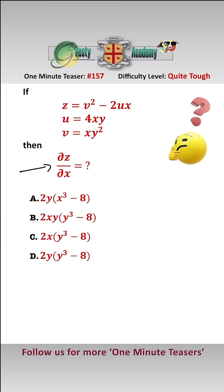So we need to be careful here because the partial derivative of z with respect to x, z contains v and u, and u and v both contain x. So we're going to have to use implicit differentiation.